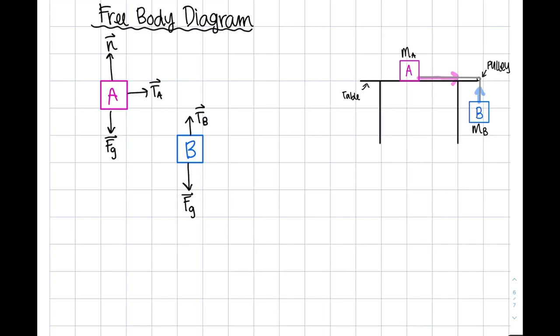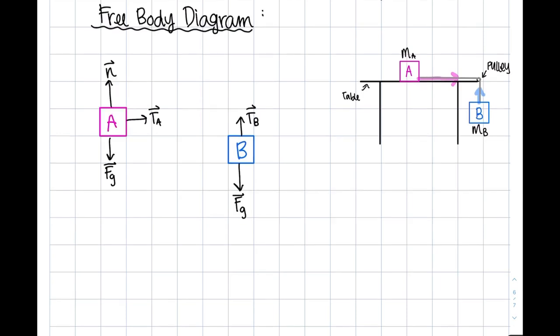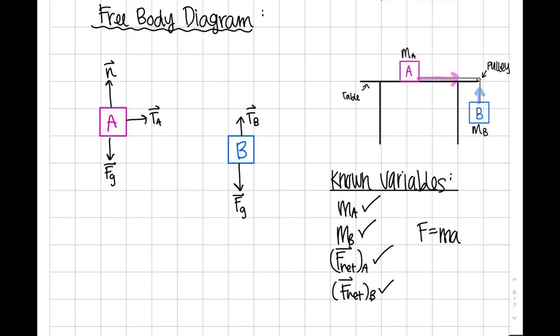Now that we have our free body diagram completed, I usually like at this point to list the known values to remind me what I can use to find the missing variable, which in our case is acceleration. We know the masses of the blocks, meaning they have been identified as MA and MB, and we also have enough information from our diagrams to calculate the net forces of both blocks. Taking a look at Newton's second law again, we now have the total masses and we can calculate the total net force if we find the net force of A and the net force of B.